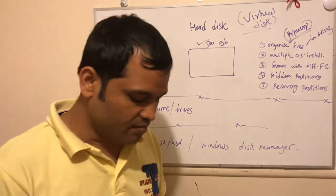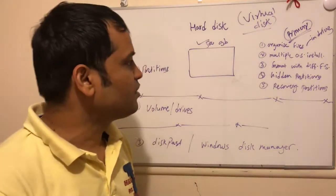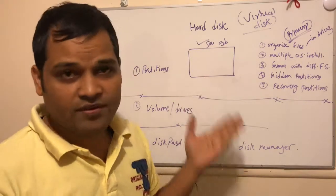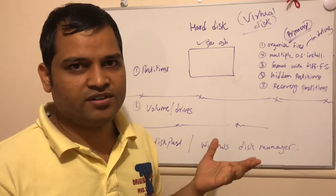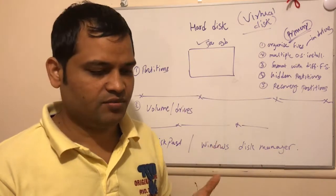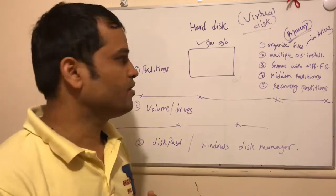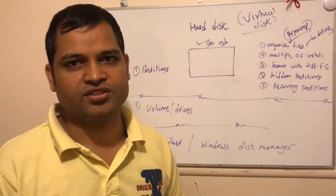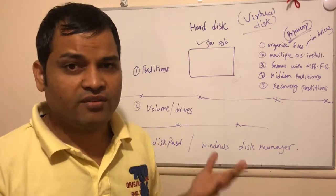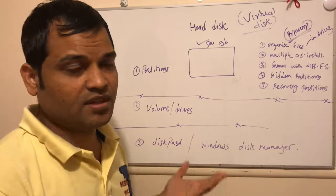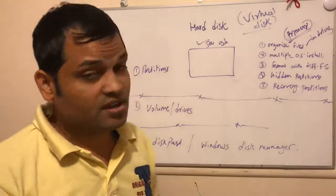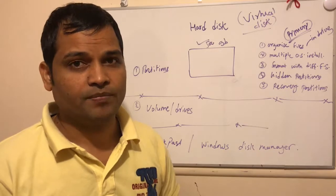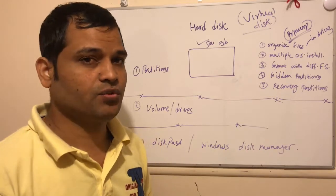500 GB of data can be saved on this particular hard disk. Now, you can use that 500 GB hard disk without making any partitions — store all your data on the same hard disk without doing any partitions. We can do it, but creating partitions on this hard disk is going to give you some advantages and benefits.